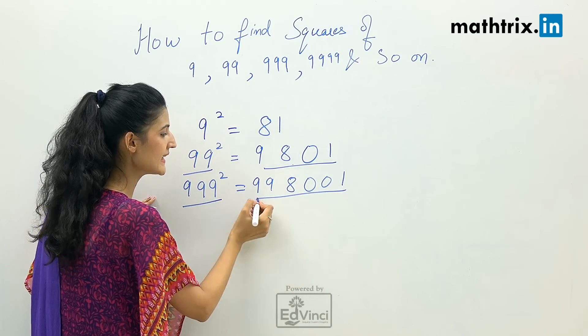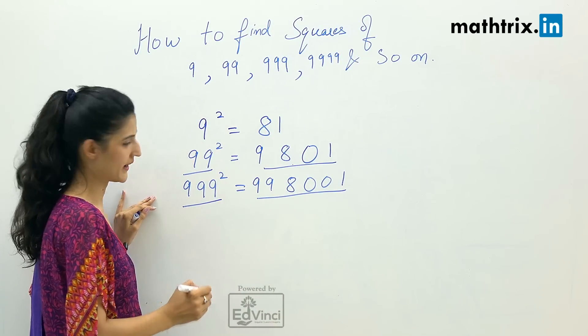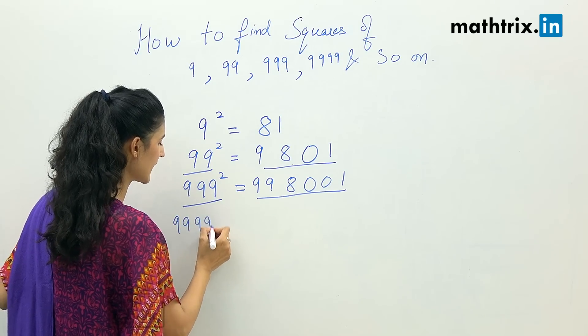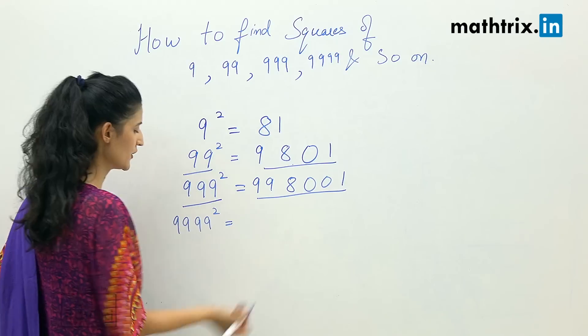So the answer is 998001. We will take another example which is 9999 square.